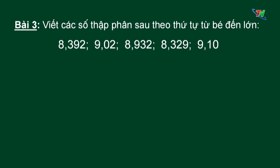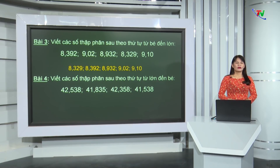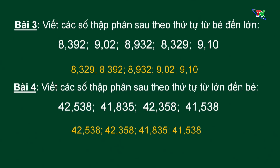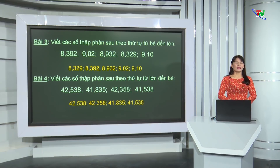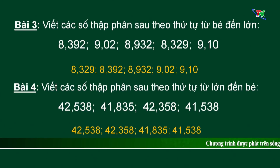Bài tập số 3: Viết các số thập phân sau theo thứ tự từ bé đến lớn. Kết quả như sau. Bài tập số 4: Viết các số thập phân sau theo thứ tự từ lớn đến bé. Kết quả như sau. Qua phần kiểm tra bài tập về nhà, cô tin chắc chắn rằng có rất nhiều bạn đã làm tốt. Cô hy vọng các em tiếp tục phát huy trong tiết ôn tập ngày hôm nay.